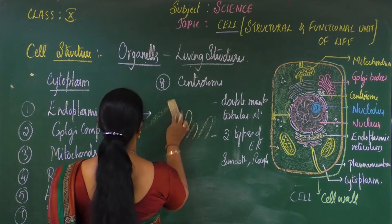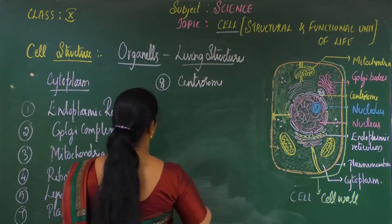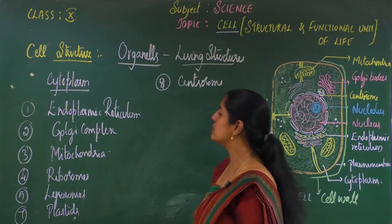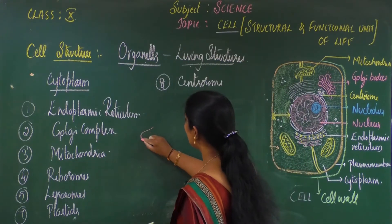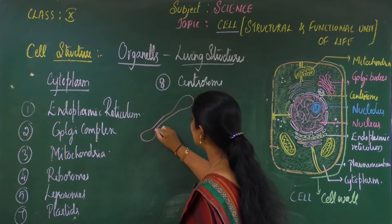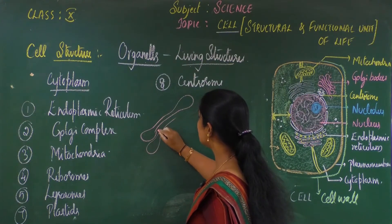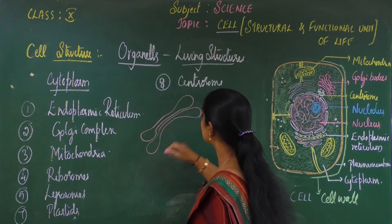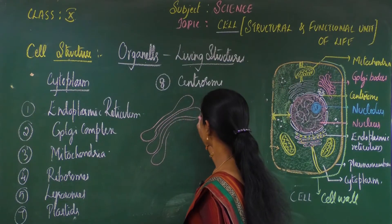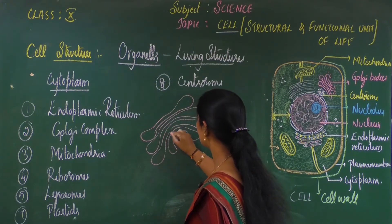Next let us talk about the Golgi complex. Each organelle has its function and a vital role — it is so interesting to understand each organelle in detail. The Golgi complex is a flat, sac-like structure. If you see the structure, they are flat and sac-like, stacked arrangements.